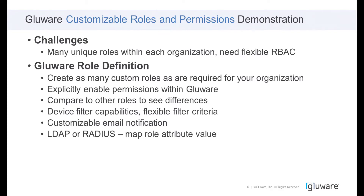This next new feature in version 3.7 is the ability to customize roles and permissions. Within large organizations you have many different players with different needs — some just need to read, some need to make changes, some need a special combination. Prior to 3.7, Glueware provided five levels of role-based access control. Now with 3.7 you can fully customize roles and permissions, provide filters on the devices they have access to, customize email notifications, and tie it into your existing LDAP or RADIUS.